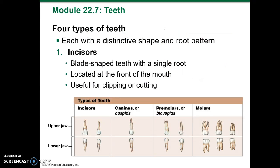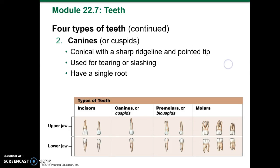There are four types of teeth, each with a distinctive shape and root pattern. The incisors are blade-shaped teeth with a single root, located at the front of the mouth and most useful for clipping or cutting. The canines, or cuspids, are conical with a sharp ridgeline and pointed tip; they're used for tearing or slashing and have a single root.